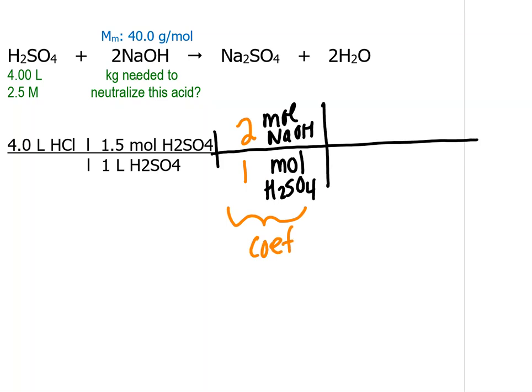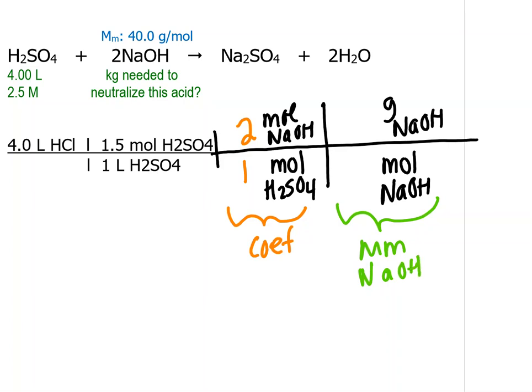Next step, it asks for how many kilograms to neutralize this. So I've got moles. I'll go from moles. Usually we go to grams next, because that's how molar mass is done. And so I'm going to use the molar mass of sodium hydroxide, which is 40.